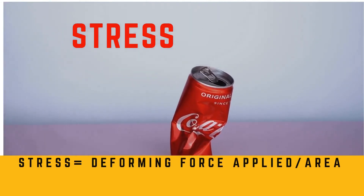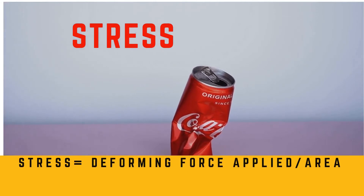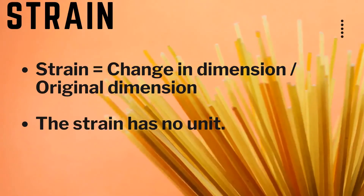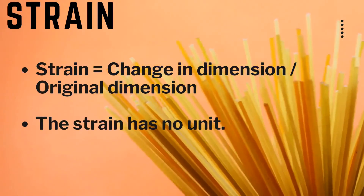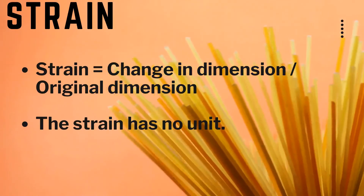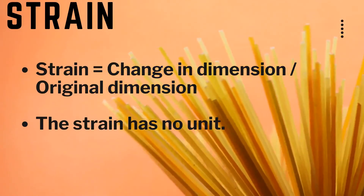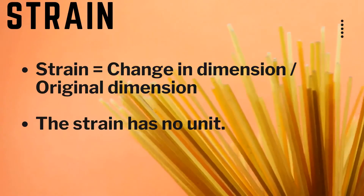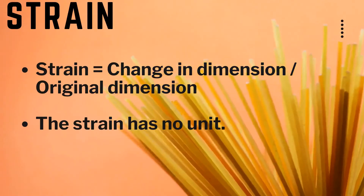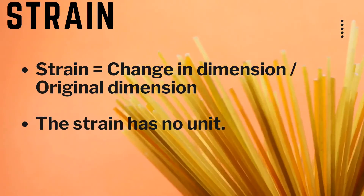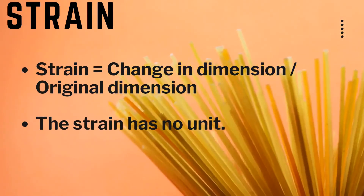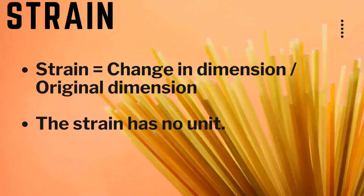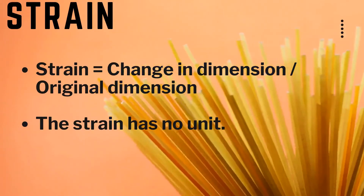Strain is a change in the dimension of the body per unit original dimension. It is also defined as the ratio of the change in dimension to the original dimension. There is no unit for strain.